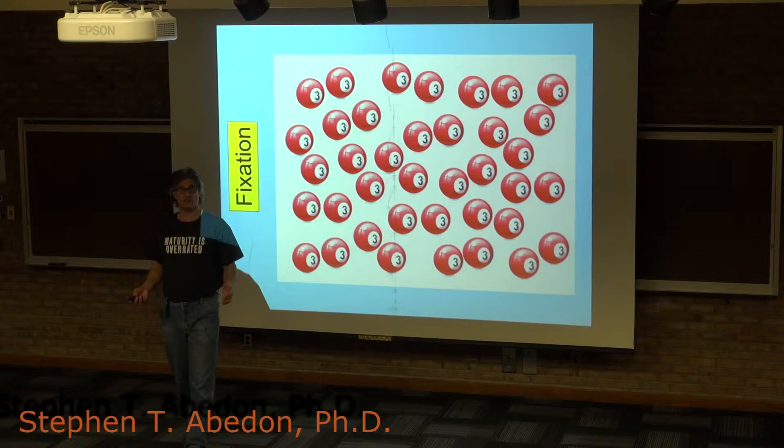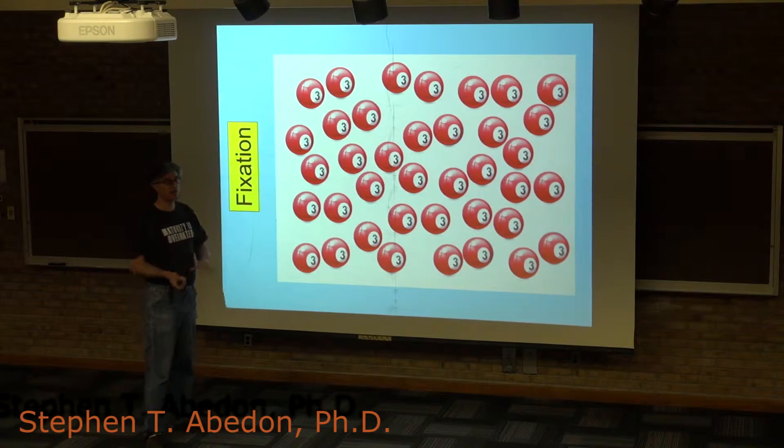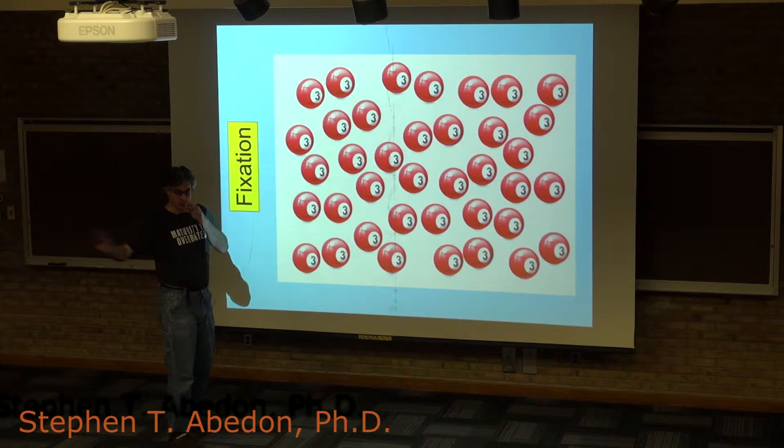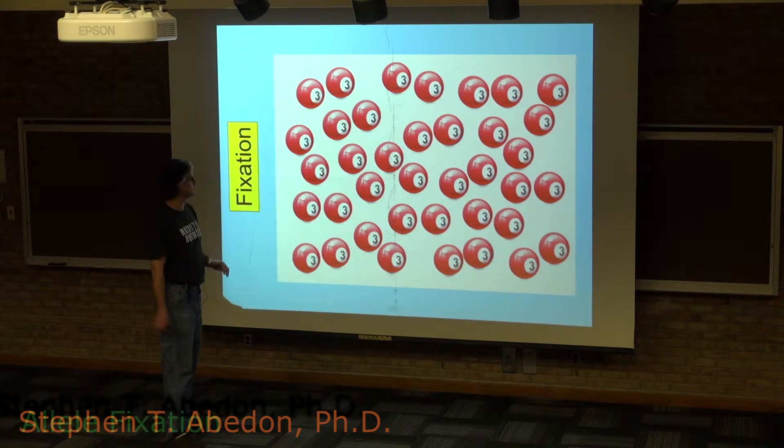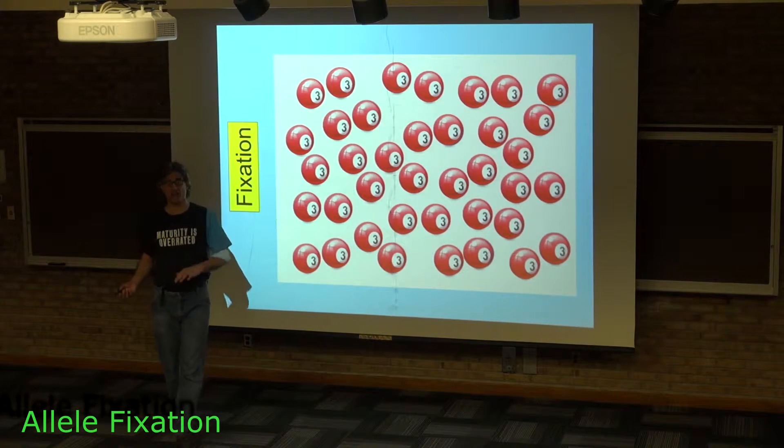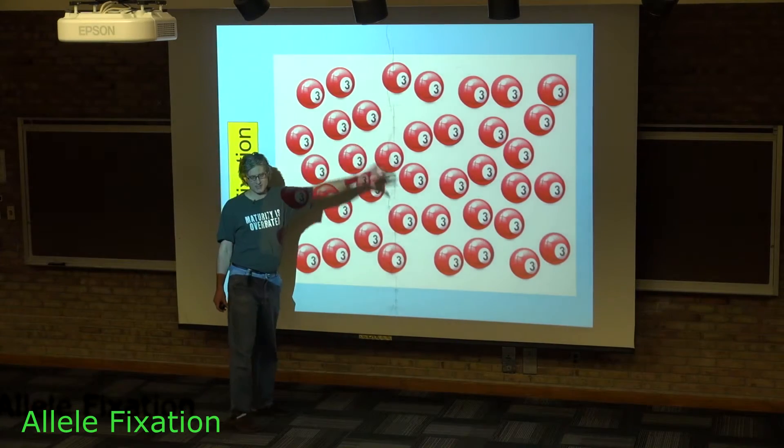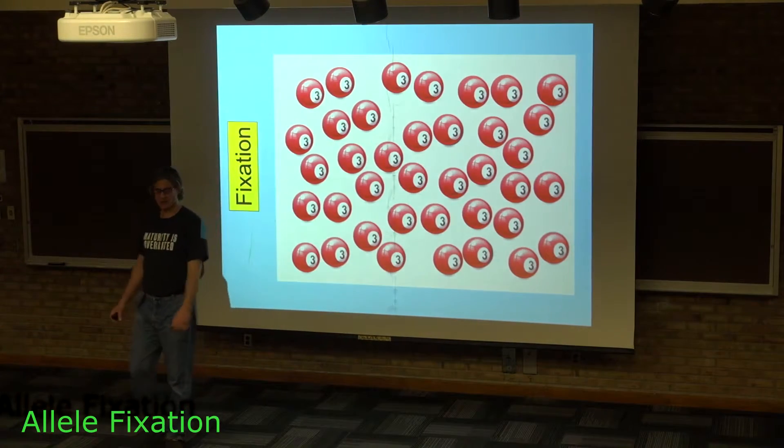An allele has been fixed within a population when, at a given locus, every single allele that's present across the whole population is that allele. And here I've represented it with the red 3 pool ball, and you can see that every single one of these pool balls is red and is also a number 3.